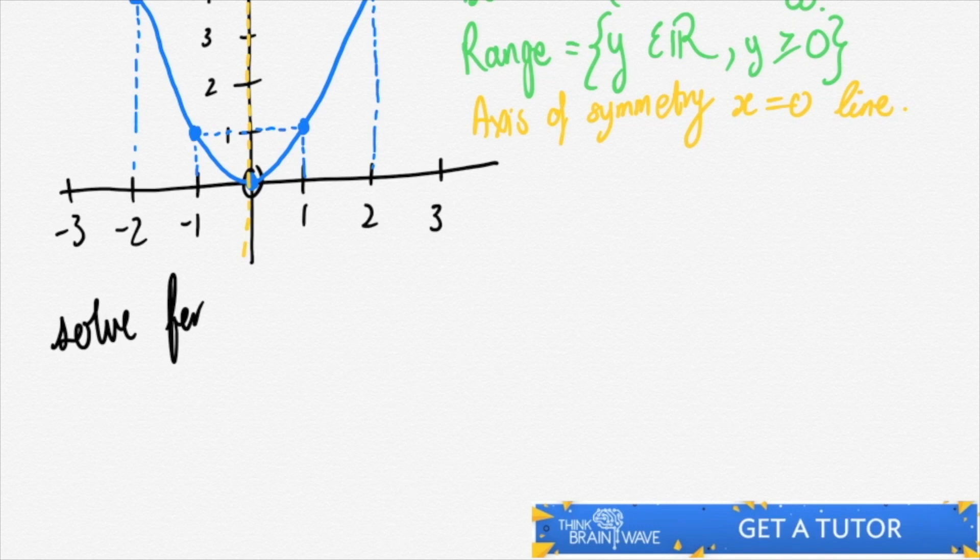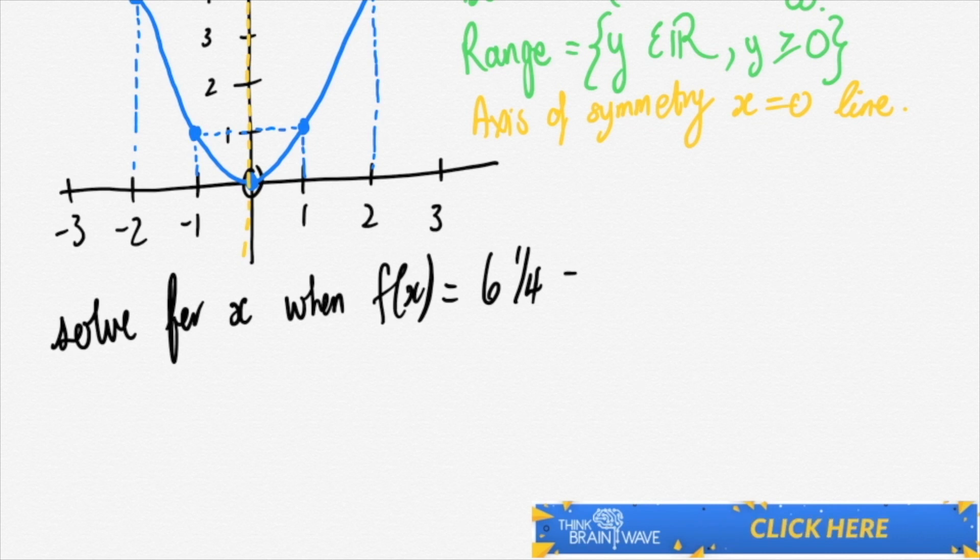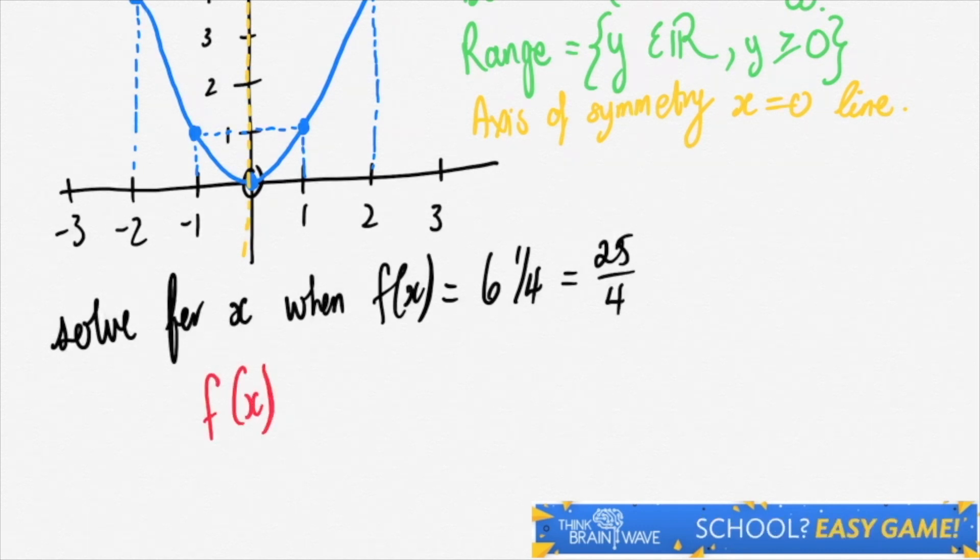So let's solve for x when f of x is equal to 6 and a quarter. This is the same as saying 25 over 4. So let's do this.